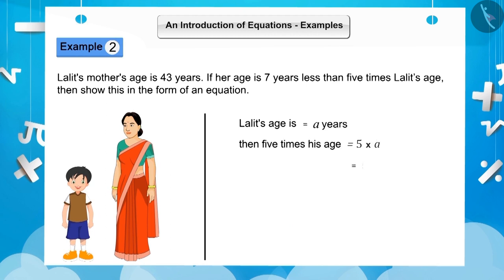...be 5 multiplied by a, that is 5a. As we know that Lalit's mother's age is 7 years less than 5 times Lalit's age, then his mother's age will be 5 times Lalit's age minus 7, that is 5a minus 7.